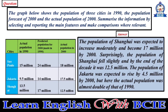The population of Shanghai was expected to increase moderately and become 17 million by 2000. Surprisingly, the population of Shanghai fell slightly, and by the end of the decade it was 12.5 million. The population of Jakarta was expected to rise by 4.5 million by 2000, but the actual population was almost double that of 1990.